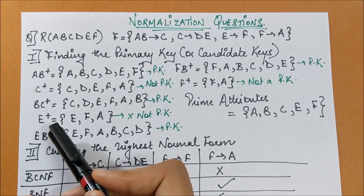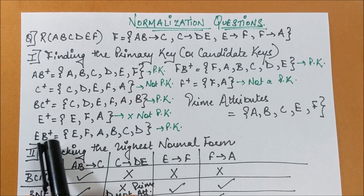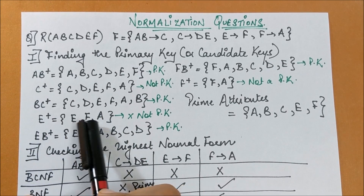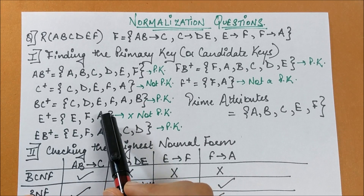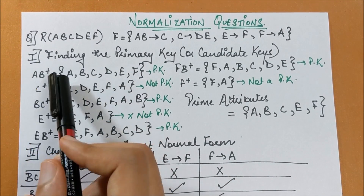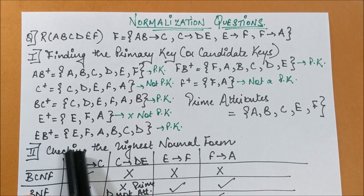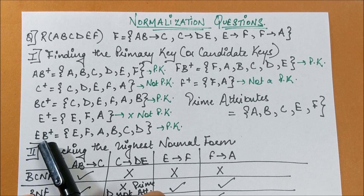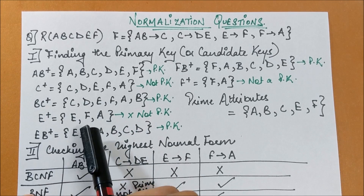Next, I find the closure of E — this is also not a primary key. But A is already present in that closure set, and if I add B, I get AB which is already a primary key. Therefore, EB is another candidate key. I verify this by confirming all attributes appear in its closure. This is a shortcut technique I discussed in my previous video session.